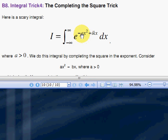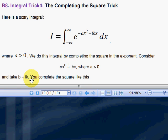What I have chosen to do here is pull the minus sign out, so I have ax squared minus bx. If you put in b is ik, and then the minus sign goes back in there, then you'll get minus ax squared plus ikx. So I want to focus my attention on this and do a completion of a square kind of calculation.